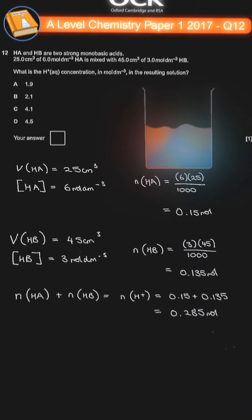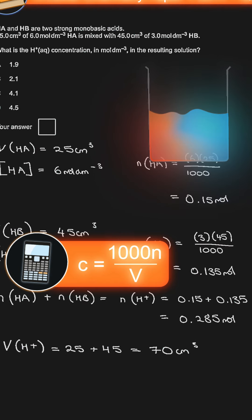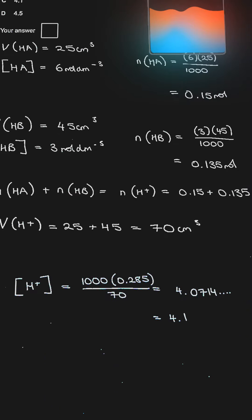The new total volume is 70 centimetres cubed, and then we calculate the concentration by rearranging the equation to get 1000 n over V. So 1000 times 0.285 over 70 is about 4.0714, which rounds to 4.1, so it's C.